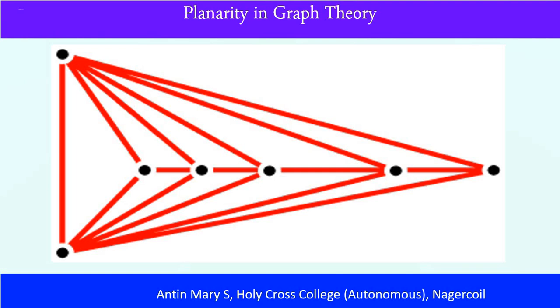Euler also found an upper bound for number of edges: m is less than or equal to 3n minus 6, where m is the size of the graph and n is the order of the graph.